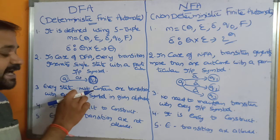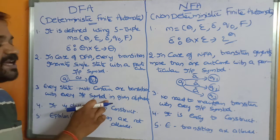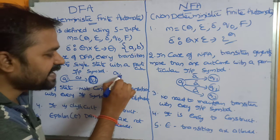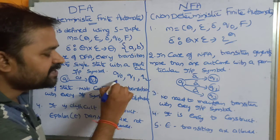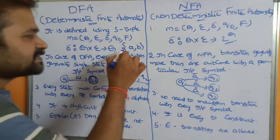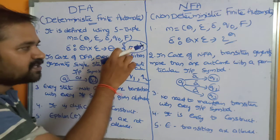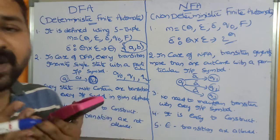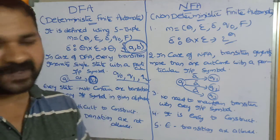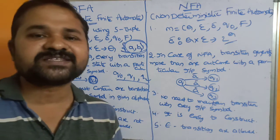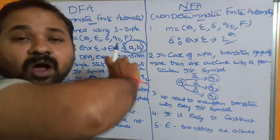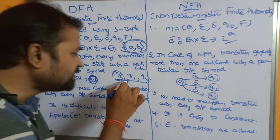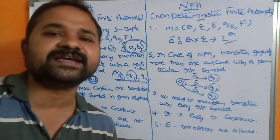The third difference: in DFA, every state must contain one transition for every input symbol in the given alphabet. If the input alphabet contains symbols a and b, and states are q₀, q1, q2, then all states must use both symbols — 'a' and 'b' must each be applied on q₀, q1, and q2. If the alphabet has five symbols (a, b, c, d, e), every state must have transitions defined for all five.